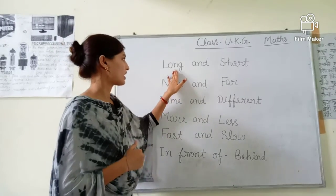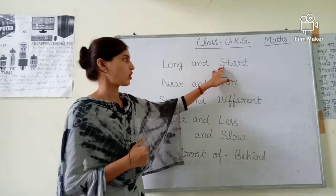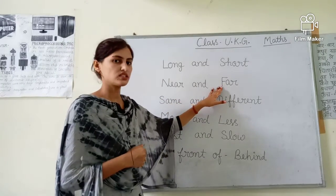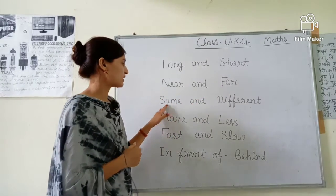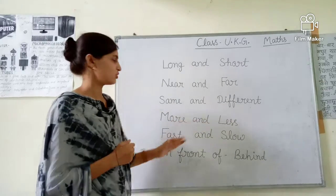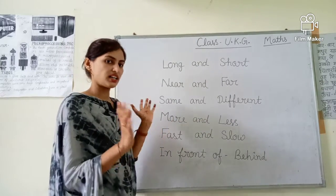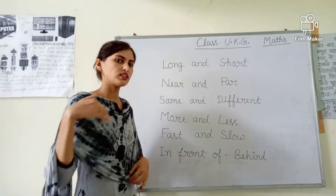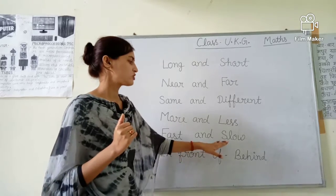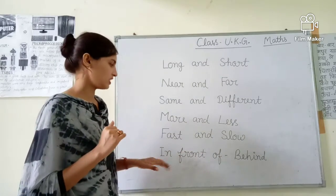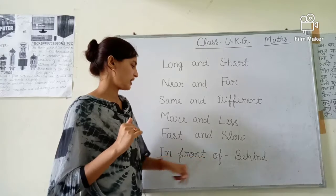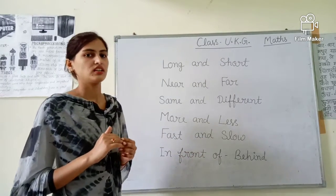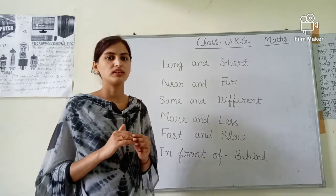Long means lamba and short means chota. Near means pass and far means dur. Same means ek tarah, different means alaq. More means jada, less means cum. Fast means teez and slow means dheere. In front or behind — front means saamne and behind means peechhe. Thank you so much! See you in the next video!